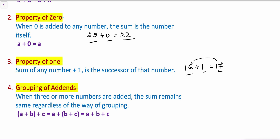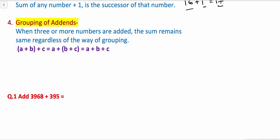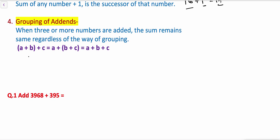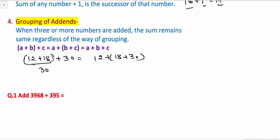Property 4: Grouping of addends. When 3 or more numbers are added, the sum remains the same regardless of the way of grouping. For example, 12 plus 18 plus 30 is the same as 12 plus 18 plus 30 grouped differently. First, solving the bracket: 12 plus 18 is 30, then 30 plus 30 is 60. In the other grouping, 18 plus 30 is 48, and 12 plus 48 is also 60.